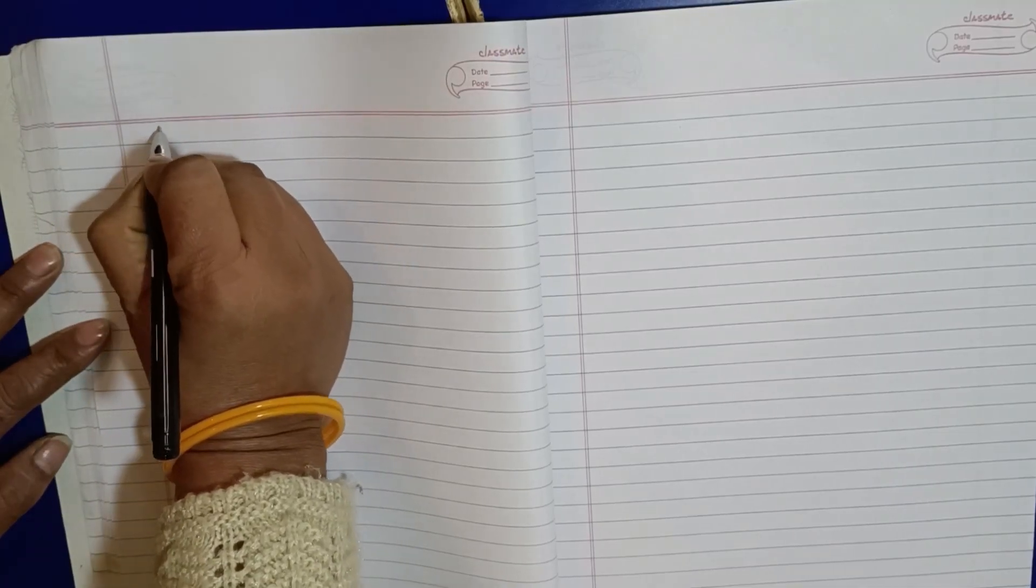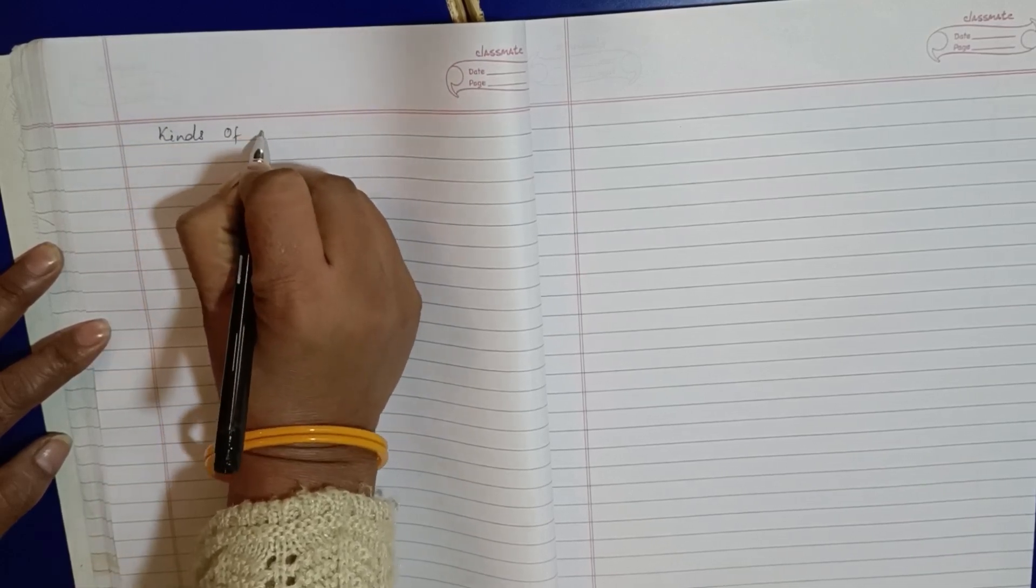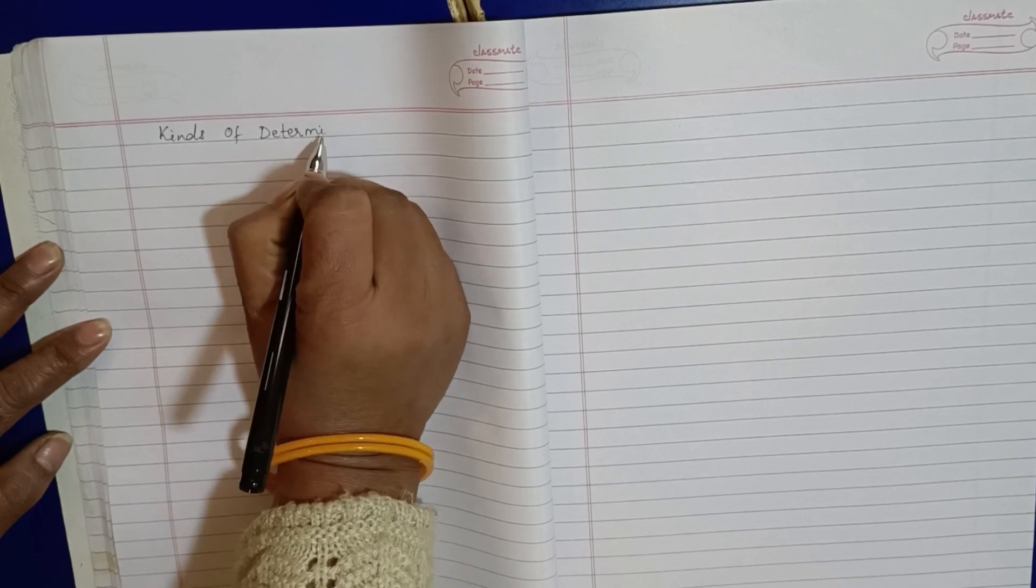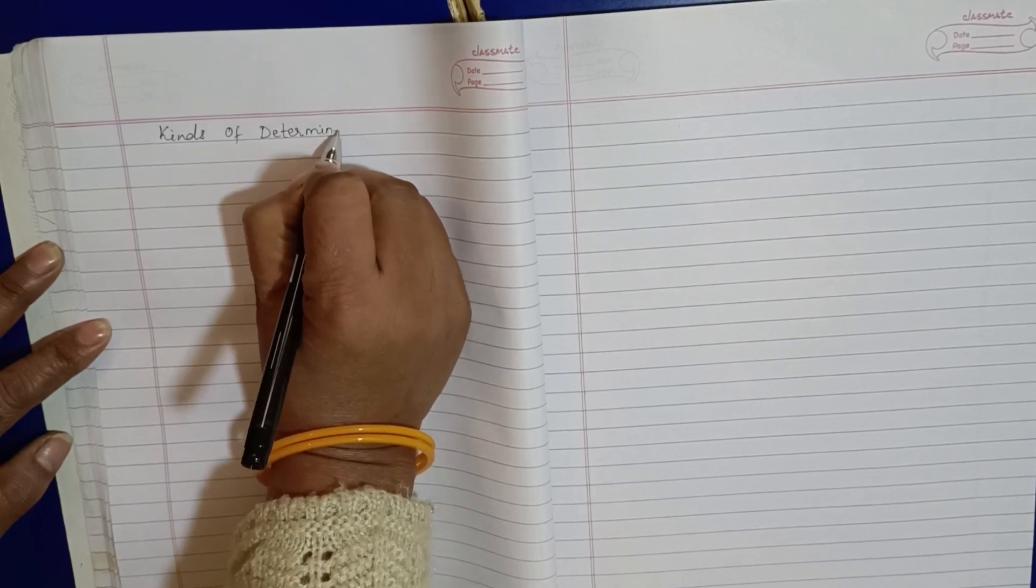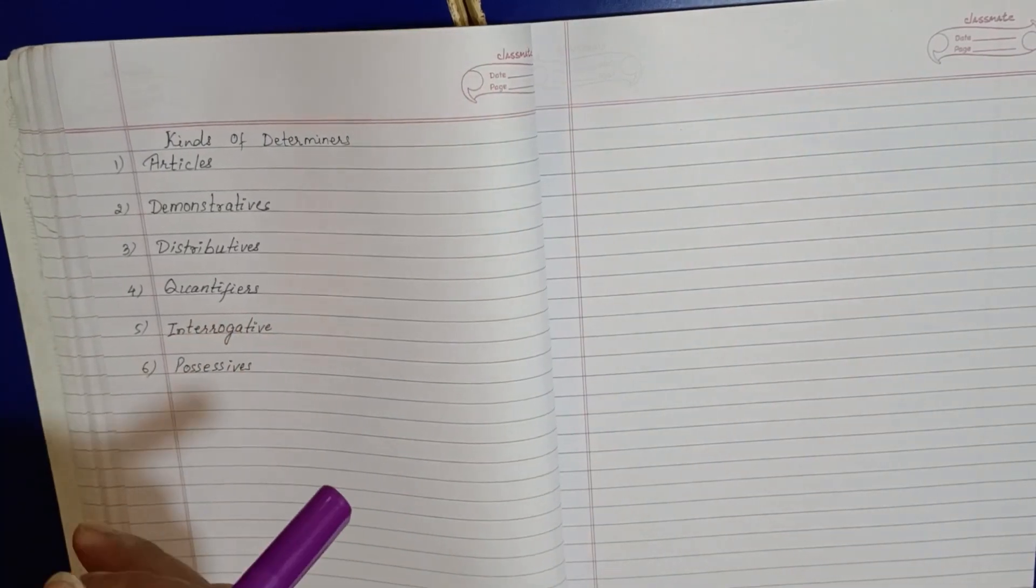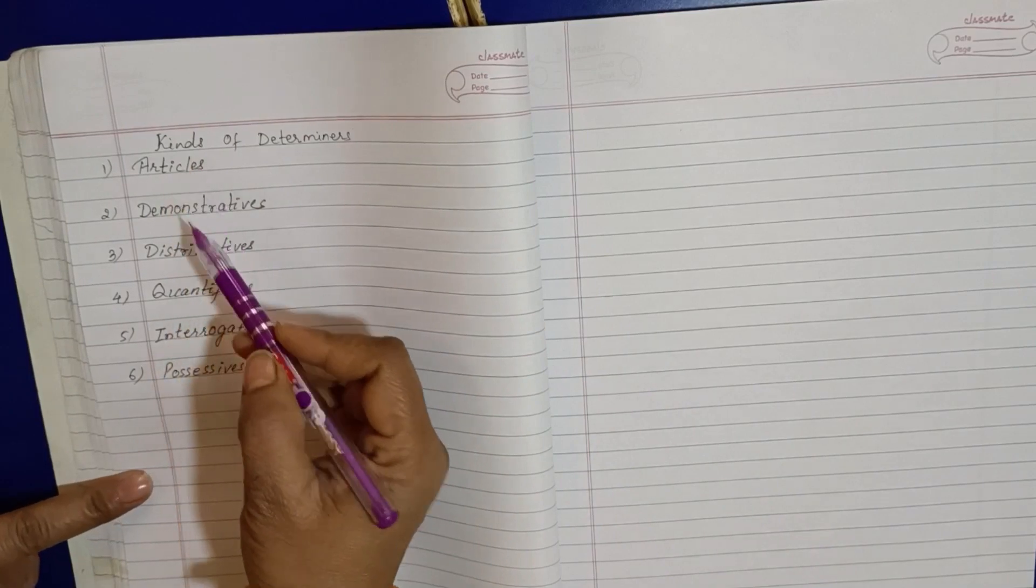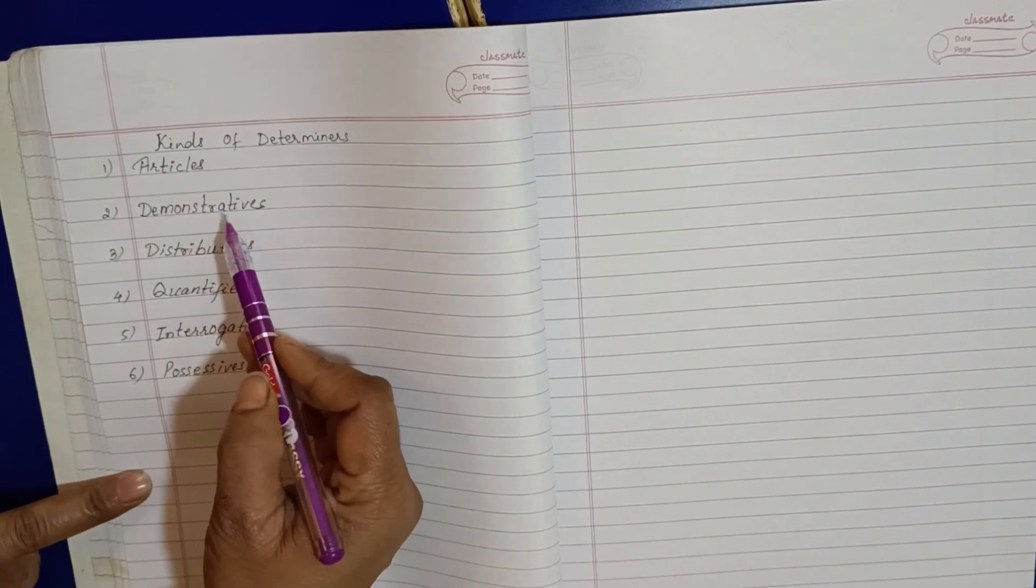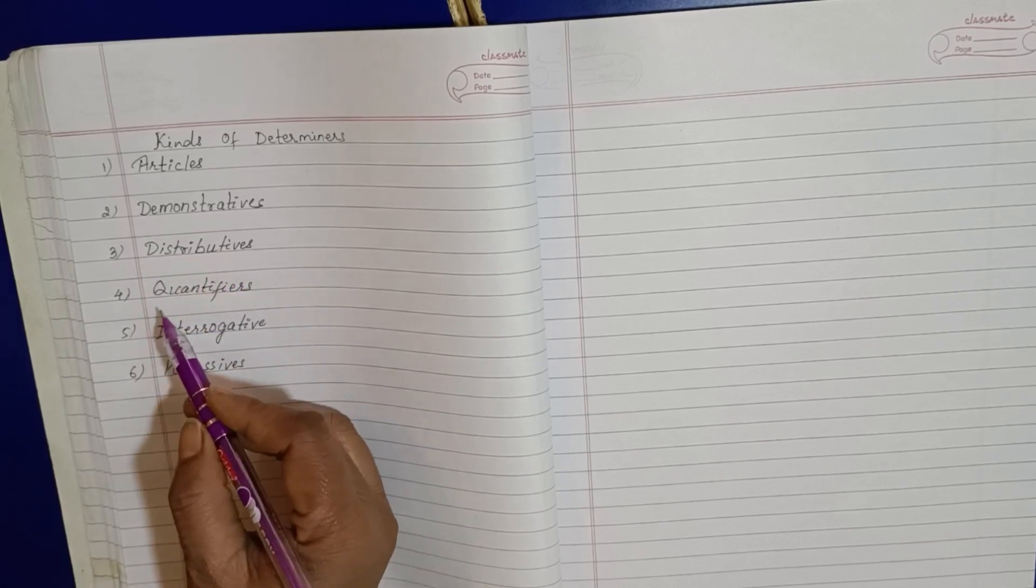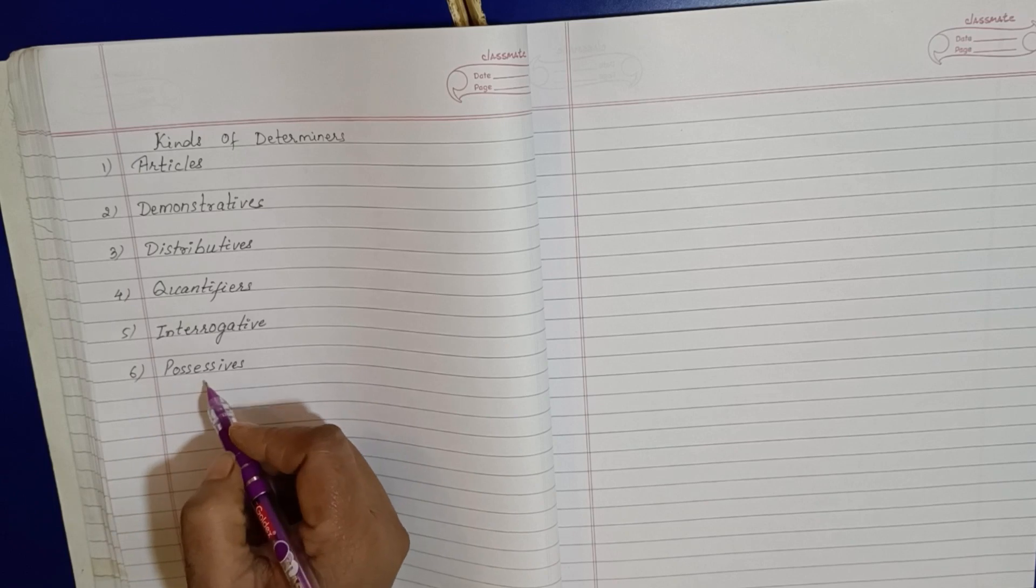So let me write down kinds of determiners. So there are six kinds of determiners, that is articles, demonstratives, distributives. Number three is distributives. Number four is quantifiers and number five is interrogative and number six is possessive.